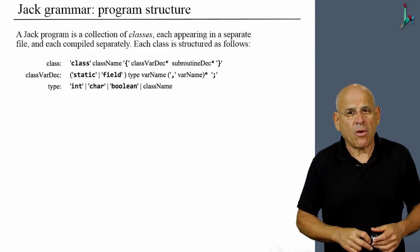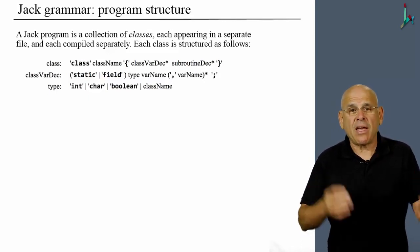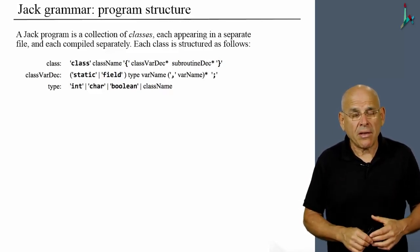Then we have a type. Now what is a type? Well, in Jack there are only three primitive types: int, char, and boolean. Now in Java there are eight types. So it's just a matter of a few more keywords.